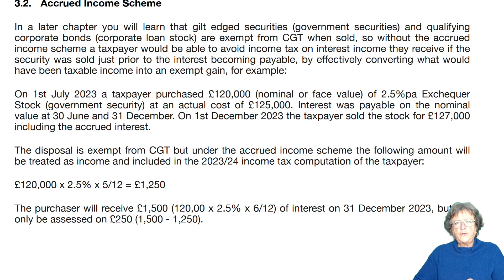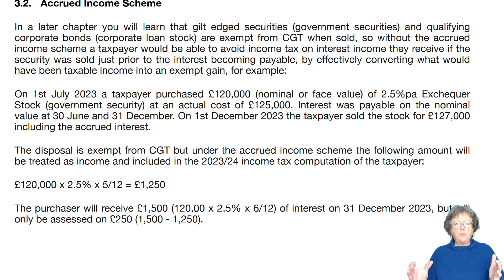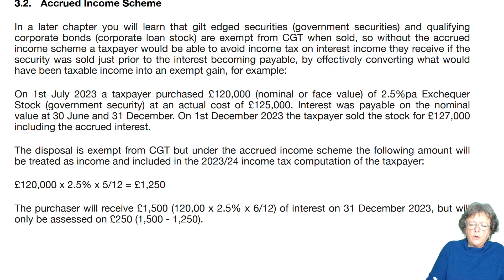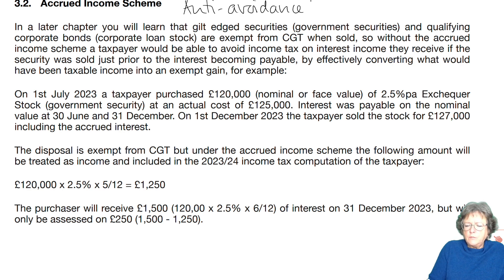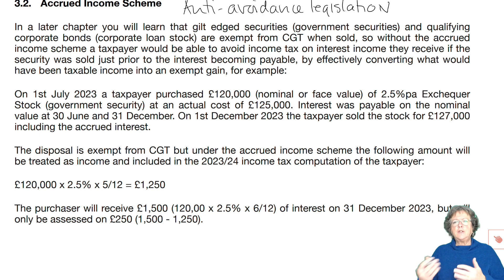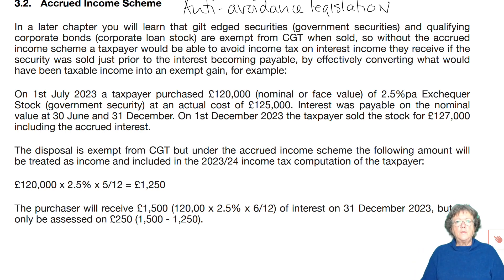The accrued income scheme does not come up very often in an exam and the information that you have here is as much information as you are going to need if it ever does — the calculation at the bottom. What it is, is what's known as anti-avoidance legislation. The law gets involved in tax and this is legislation that has been put in place in the tax system to stop you avoiding paying tax by doing certain things.